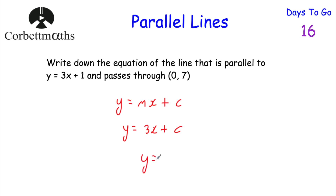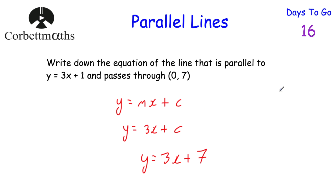So the answer would be y equals 3x plus 7. That means the equation of the line that's parallel to y equals 3x plus 1 and passes through this point is y equals 3x plus 7. It's got a gradient of 3 — the same gradient — and passes through 7 on the y-axis. And if you got that, well done.